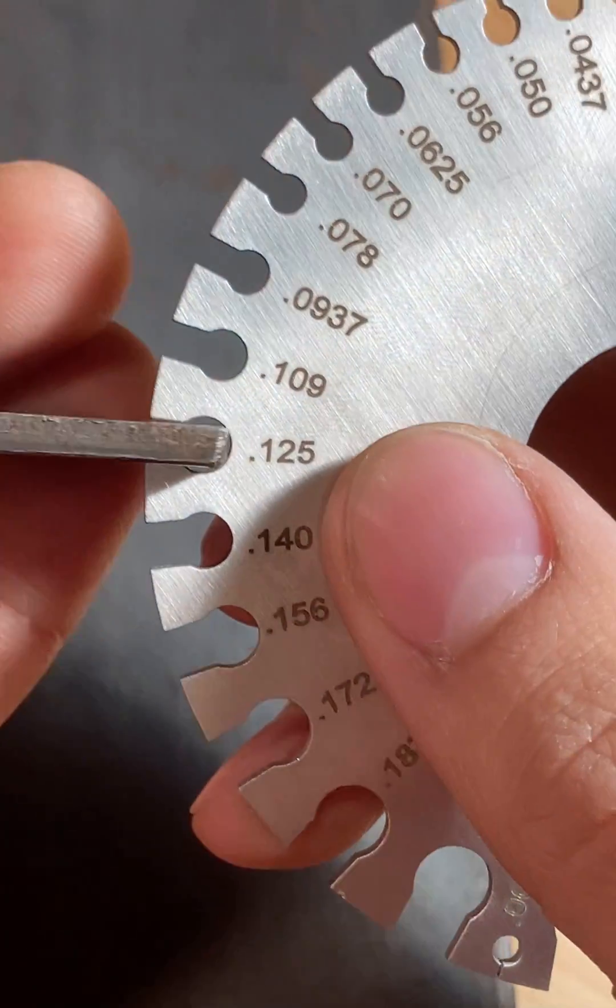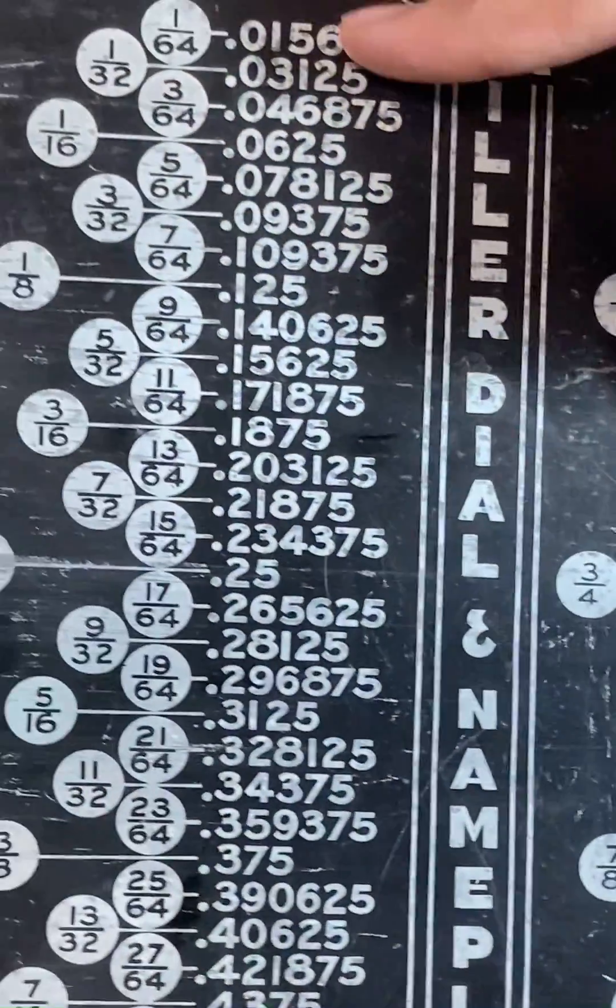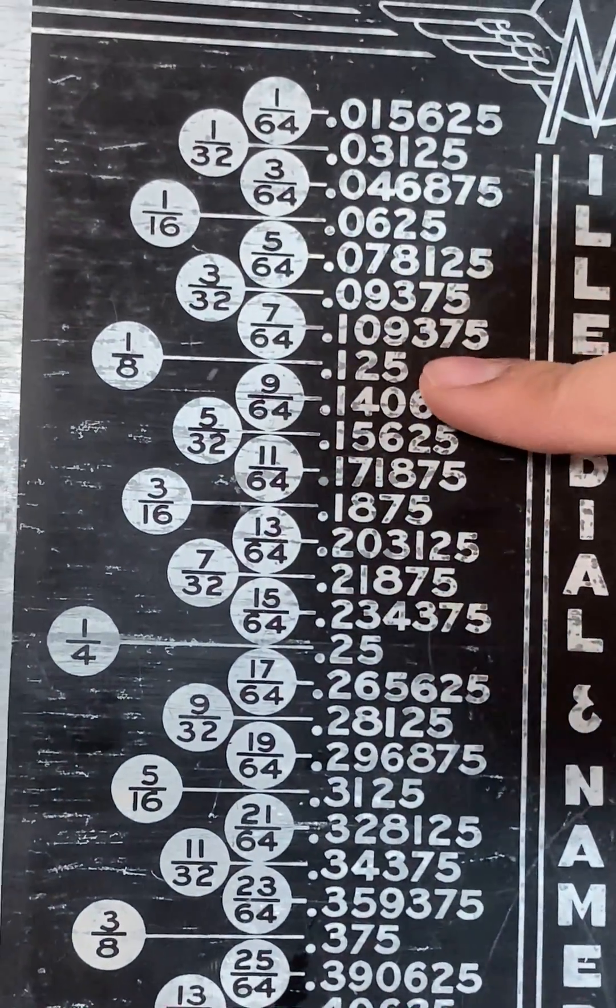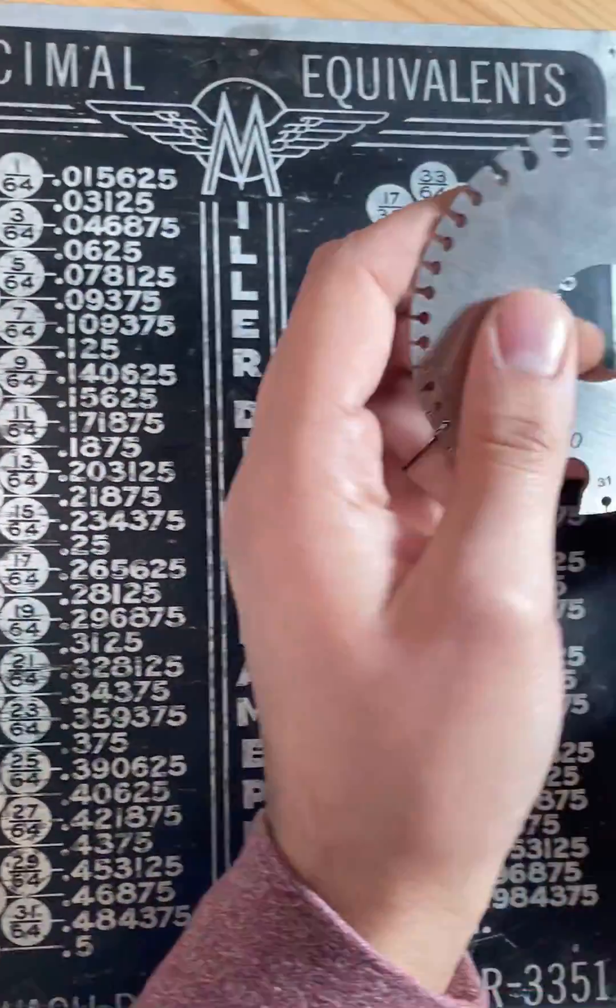You've got the decimal form again, so it's .125. You get this number and go back to your conversion chart and look for it. Here it is, .125, which is equivalent to one eighth of an inch. And that is how you use an AWG gauge.